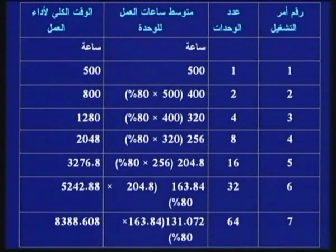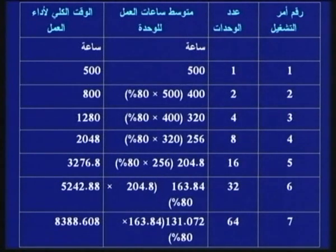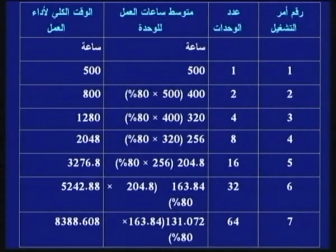أمر التشغيل 5: 16 وحدة، متوسط الوقت = 256 × 80% = 204.8 ساعة، الوقت الكل = 16 × 204.8 = 3276.8 ساعة. أمر التشغيل 6: 32 وحدة، متوسط الوقت = 204.8 × 80% = 163.84 ساعة، الوقت الكل = 32 × 163.84 = 5242.88 ساعة. هكذا تتناقص التكاليف نتيجة أثار التعلم بنسبة مئوية ثابتة.